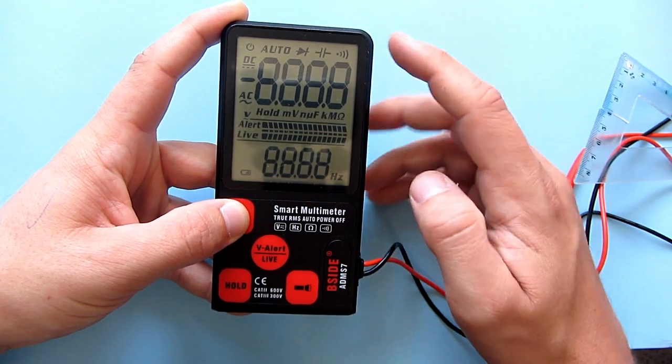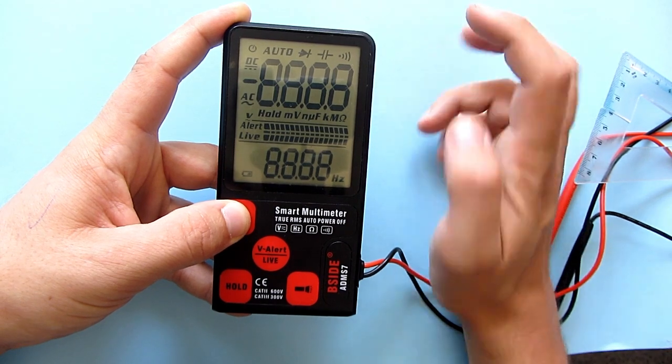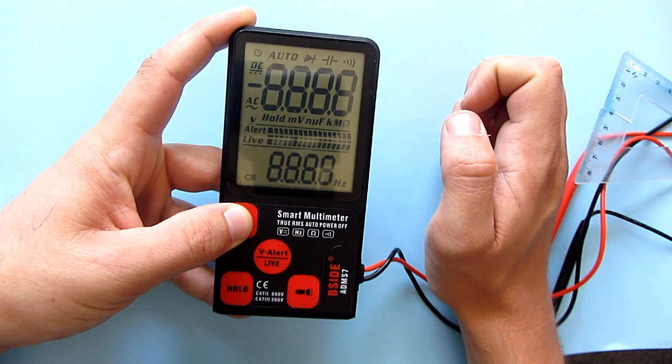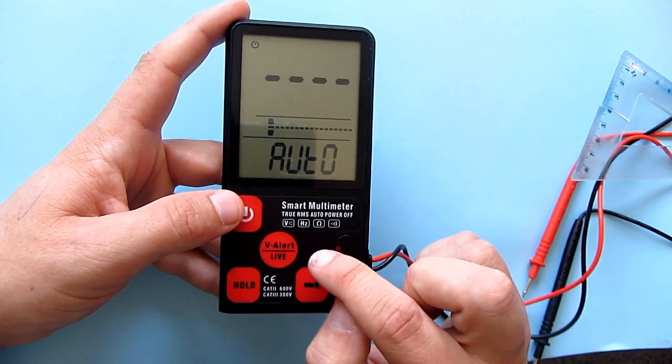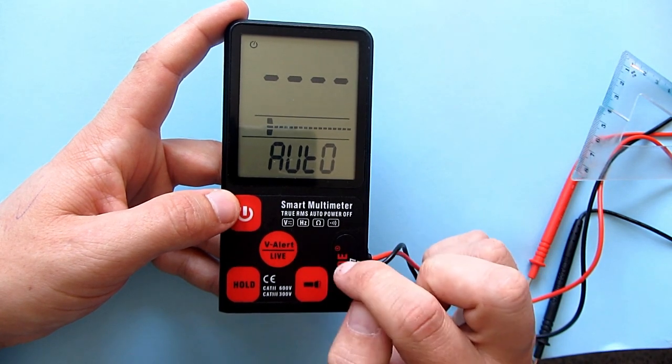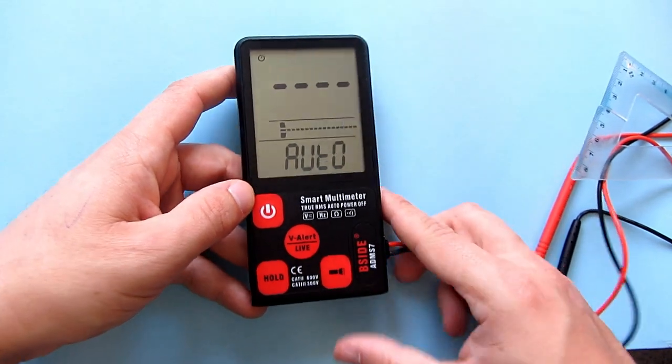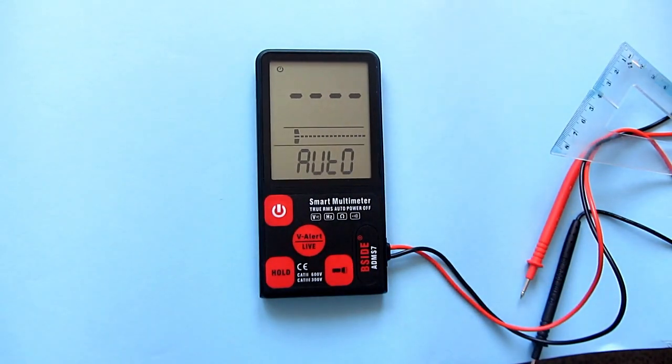We can see symbols for diode and for capacitor, but this device can only measure voltage, both DC and AC, frequency AC, it can measure resistance and has built-in continuity test. It also has some additional features, but we will talk about them later.